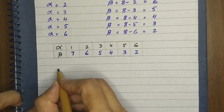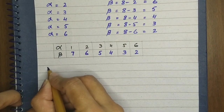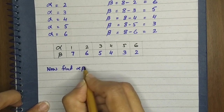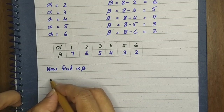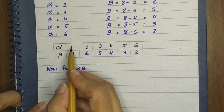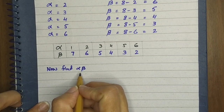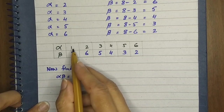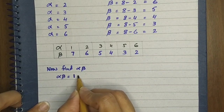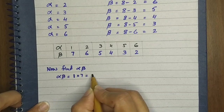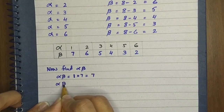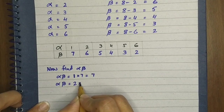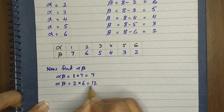Now we will find the values of alpha and beta. We will put alpha and beta values. For example, when alpha is 1 and beta is 7, we multiply: alpha times beta equals 1 times 7 = 7. When alpha is 2 and beta is 6, alpha times beta equals 2 times 6 = 12.